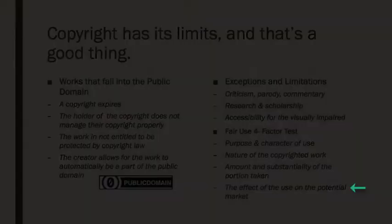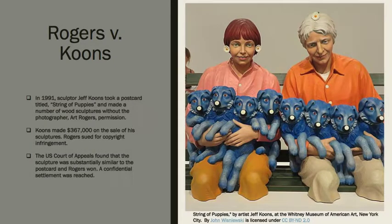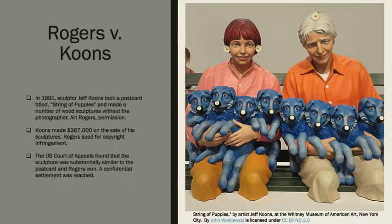Here are two examples. In Rogers versus Coons, a sculptor used a copyrighted photograph as a basis to create wood sculptures, which had the qualities of the photograph. He made hundreds of thousands of dollars on the sculptures. The photographer sued, and the sculptor claimed fair use because the photographer was not going to make sculptures. The sculptor lost. The court sided with the photographer, stating that a potential market for sculptures of the photograph existed.